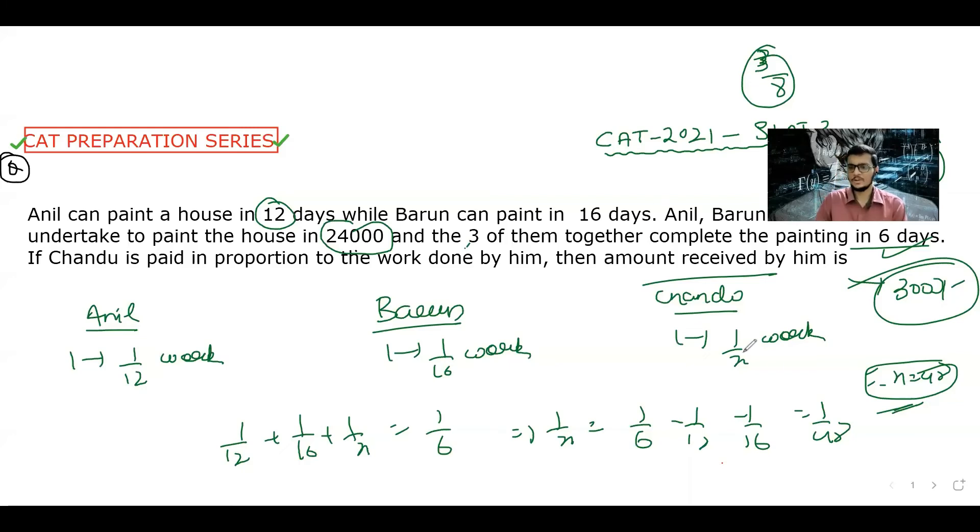The total work is done in 48 days by Chandu alone, while it takes 12 days effectively for Anil. So the money distribution gives Chandu 3,000 rupees. This was the question. I hope you understood.